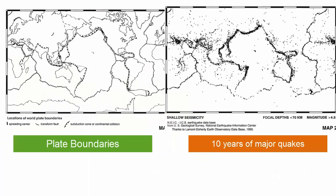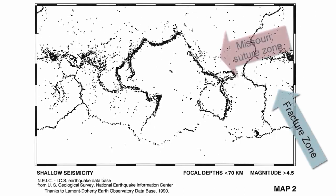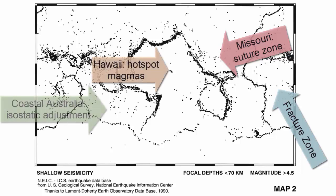This image of a decade's worth of major earthquakes on the planet shows that most of these earthquakes happen at plate boundaries and, in fact, mark the edges of these plates. You'll also notice earthquakes happening in areas where old plate boundaries have fused together, such as in fracture zones or old suture zones in the center of continents conjoined in the past. Minor earthquakes happen as magmas move through the crust above hotspots and where isostatic adjustment is happening, especially along coastlines.